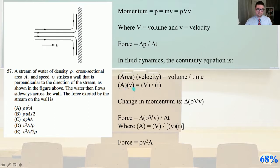In fluid dynamics, the continuity equation is the area times the velocity equals the volume divided by time. A times V equals big V divided by T. The change in momentum is Δρ big V little v. The force equals the delta in ρ big V little v divided by the change in time. Area equals our big V divided by our little v velocity times time. The force equals ρ times V² times the area. That is answer A.